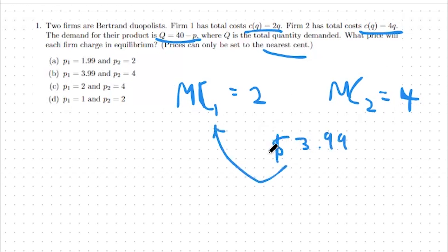So firm 1 will charge three dollars and 99 cents for their product, pricing out firm 2. Firm 2 will attempt to charge their exact marginal cost to stay in the market but they will sell zero units because they're priced out by one cent. So consumers will only consume from firm 1. This means answer choice b is the correct answer.